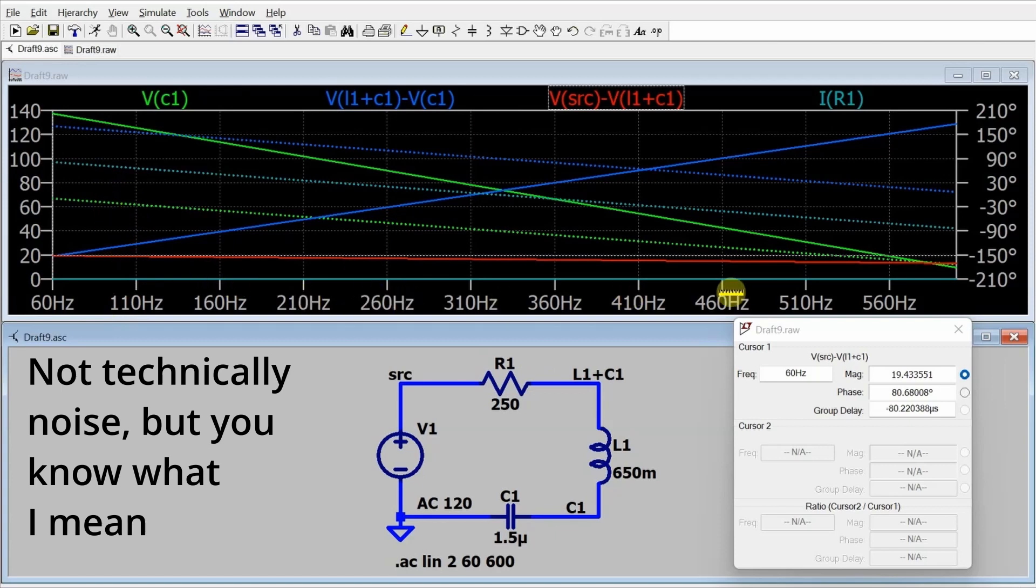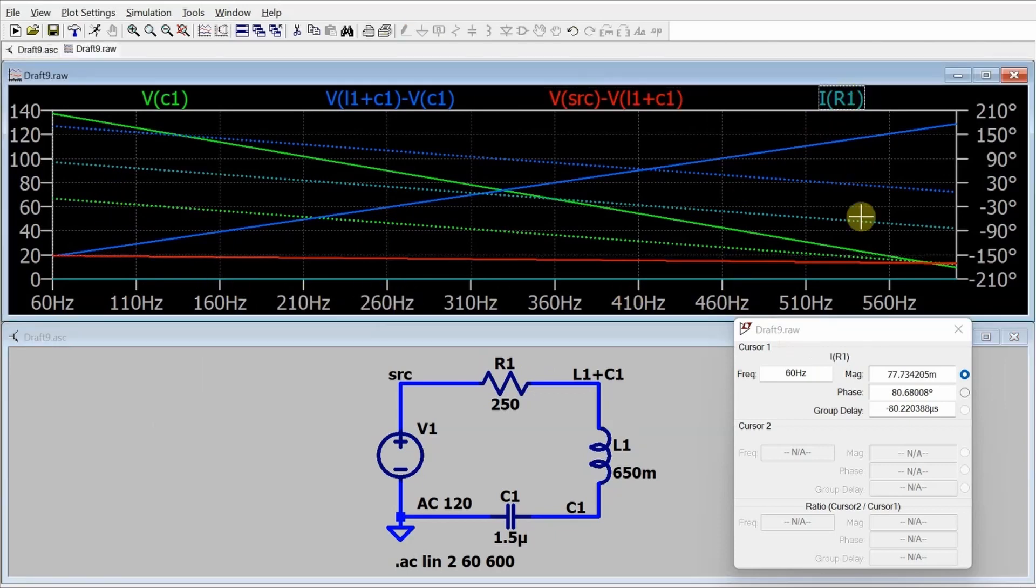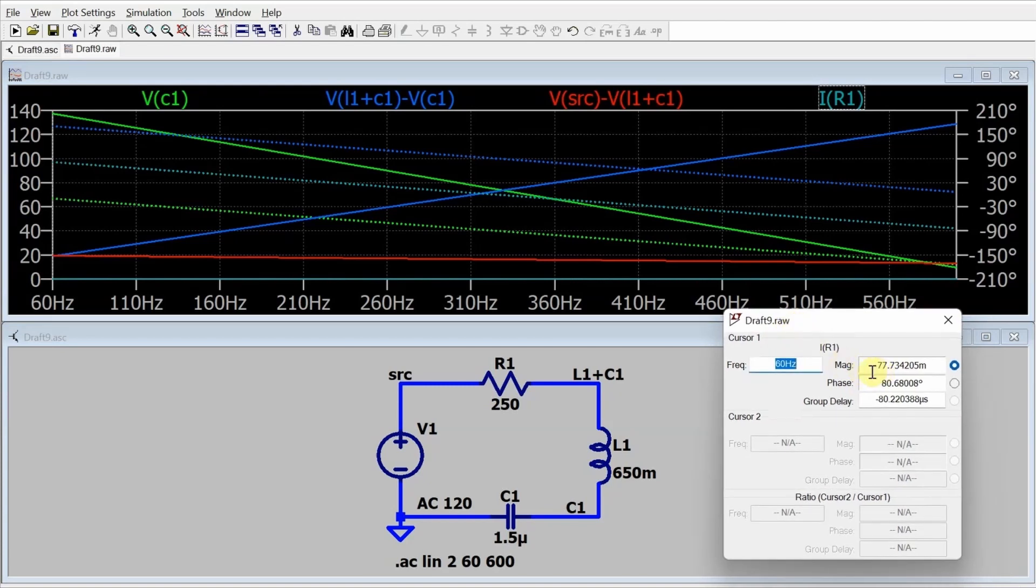Kind of disappears amongst all that noise, but that's OK. If I click on IR1, it'll give me the reading in this window right here. 77.73 milliamps with a phase angle of 80.68 degrees.